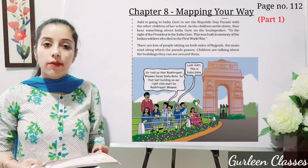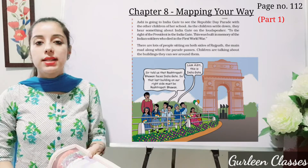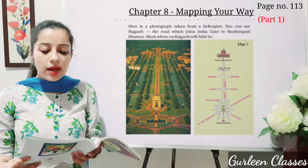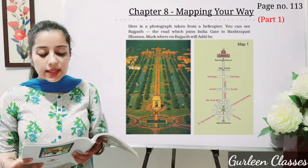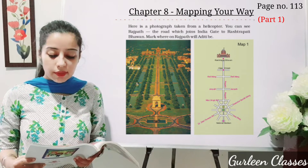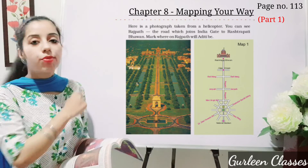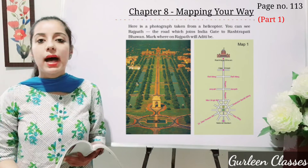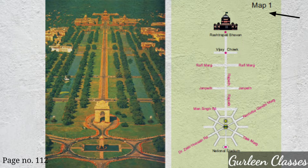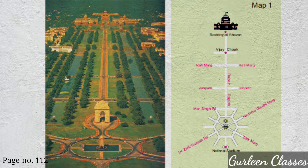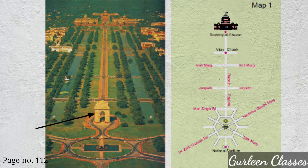Now open page number 113. Here is a photograph taken from a helicopter. You can see Rajpath — the road which joins India Gate to Rashtrapati Bhavan. So let us see on the screen; that will be more easy for you. Here you can see Map 1. In Map 1 there is Rashtrapati Bhavan — same is there in the photo. Then you can see the first cut, Vijay Chowk; the second cut is Rafi Marg; the third cut is Janpath; the fourth cut is Maan Singh Road. And here you can see India Gate in the photo, and in the map India Gate will be drawn here.